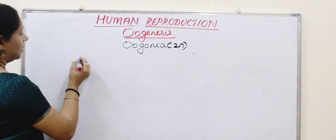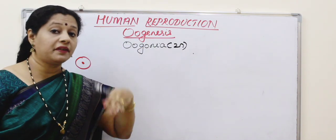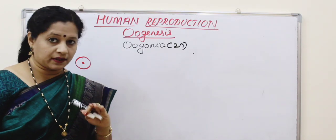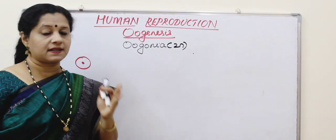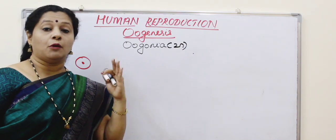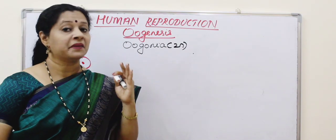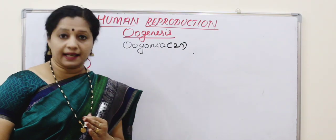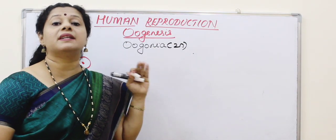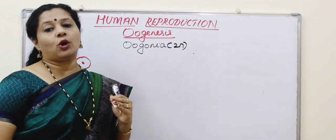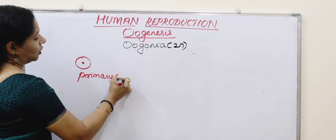The oogonia will undergo division. Being the mother cell, they will enter into meiosis. Meiosis has got two stages — meiosis 1 and meiosis 2. The prophase stage of meiosis 1 is a very long stage with five sub-stages: leptotene, zygotene, pachytene, diplotene, and diakinesis. In this case the cell gets arrested after prophase 1, and we now call that cell the primary oocyte.